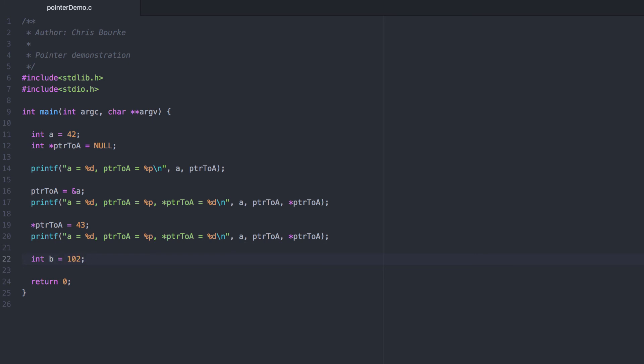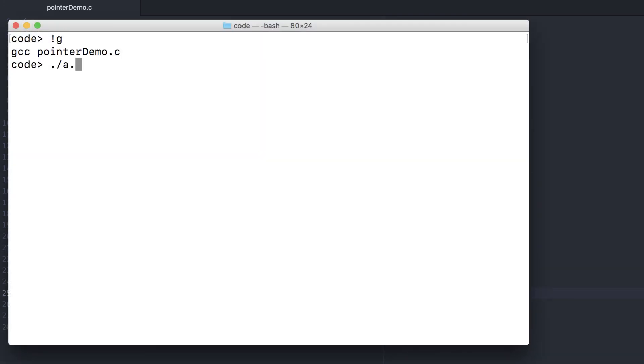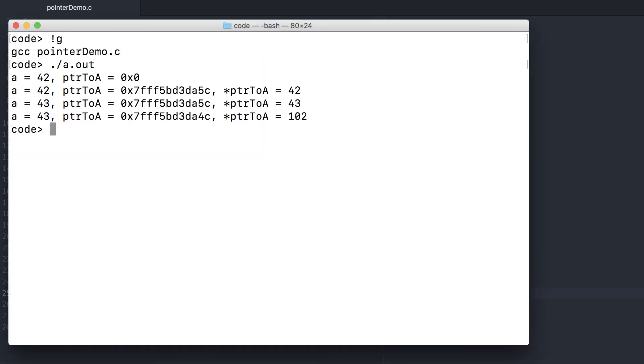Let's create another variable and make our pointer point to it instead. The variable A is stored at this memory location. But apparently the variable B is stored at this memory location. When we dereference it, we get the contents of B instead.